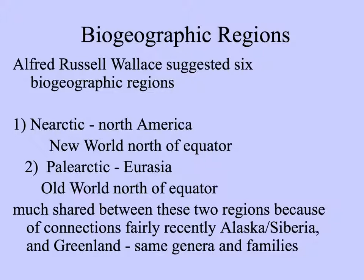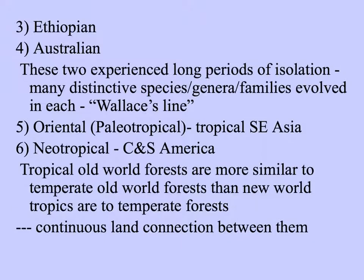Many species of plants and animals have what's called a circumpolar distribution. Both the Ethiopian and Australian biogeographic regions experience long periods of isolation. As a consequence, there are many distinctive species, genera, and families in these regions. And we can see on a map Wallace's line that explains patterns of biodiversity.